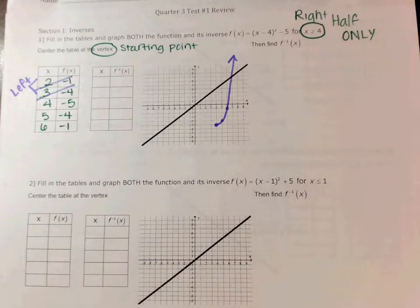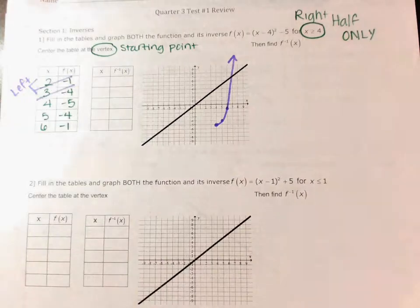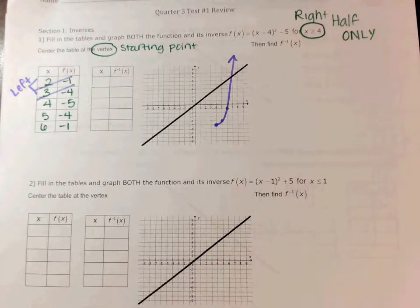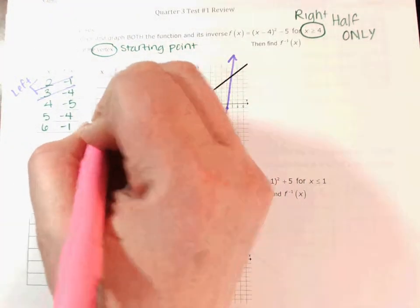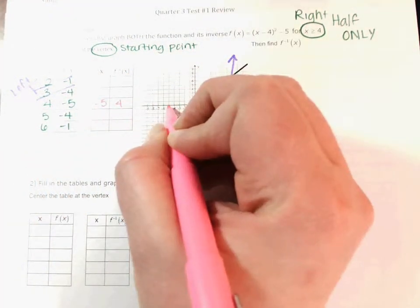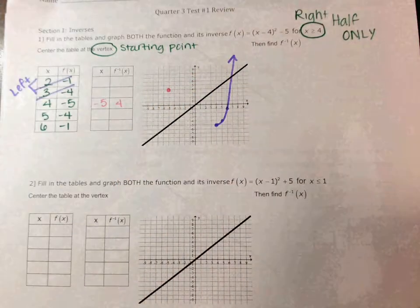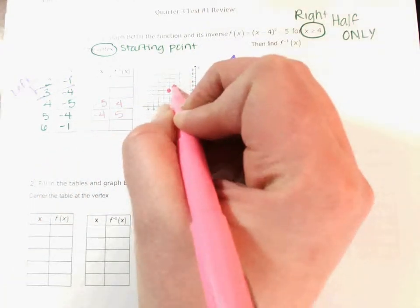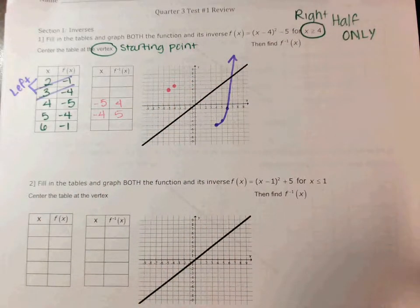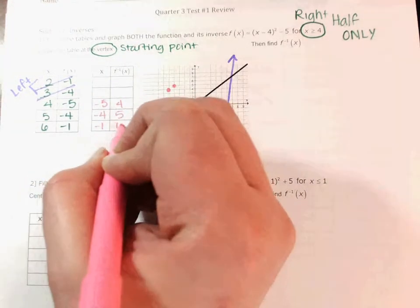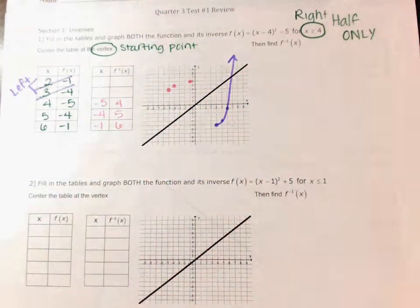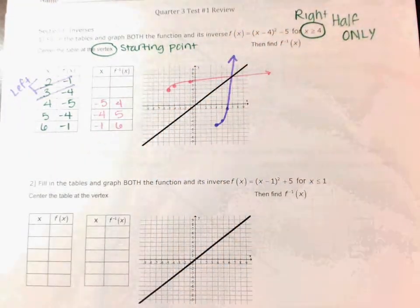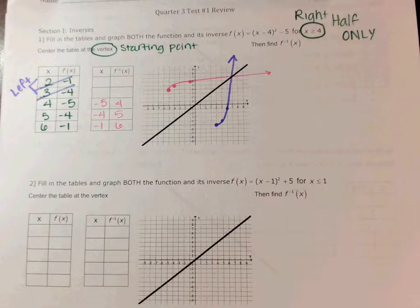How will I get the points for the inverse? You're going to switch them. So if my first point was four, negative five, now it's negative five, four. My next point was five, negative four, now it's negative four, five. And then my next point was six, negative one, now it's negative one, six. Remember that this graph is going to curve so that your graphs match on either side — that should always happen.